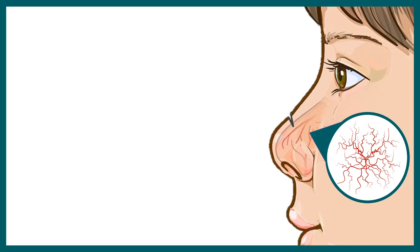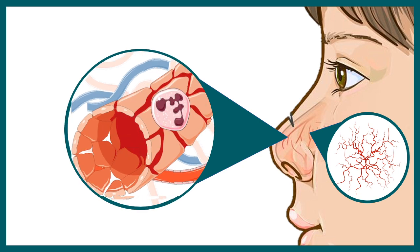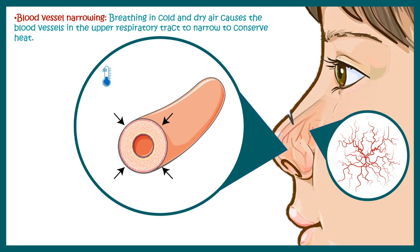In colder climates, the blood vessels inside our nose are constricted. Generally, when there is an infection, immune cells travel through these blood vessels and move out to fight the pathogens. But in colder climates, vasoconstriction occurs, so immune cells find it difficult to move out and reach the site of infection. This is one of the ways why we are more susceptible in colder climates compared to hotter ones.